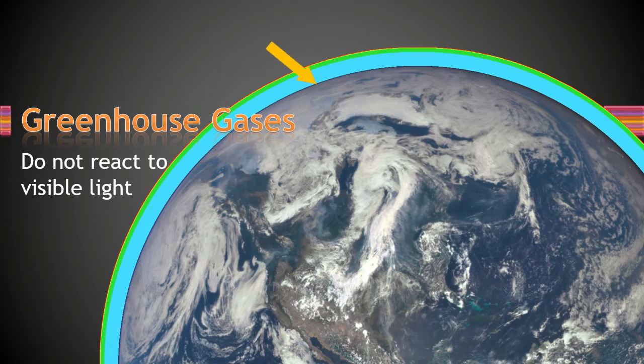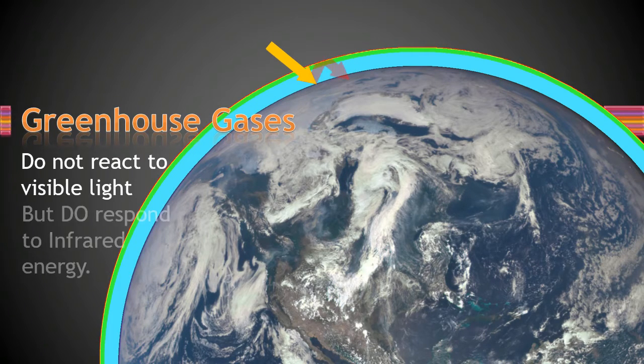Just like non-greenhouse gases, greenhouse gases do not react to visible light. But they do respond to infrared energy. So that means as the sun warms the Earth and the Earth radiates infrared energy, greenhouse gases reflect that energy back to the Earth.